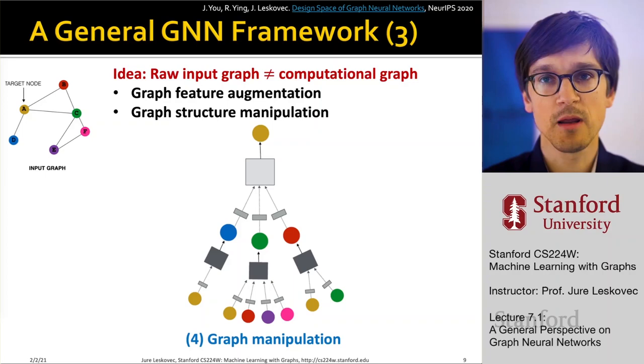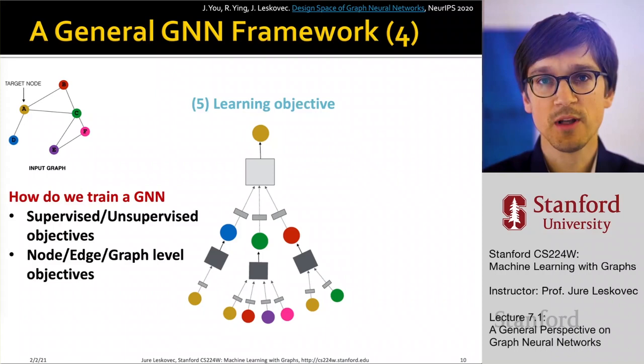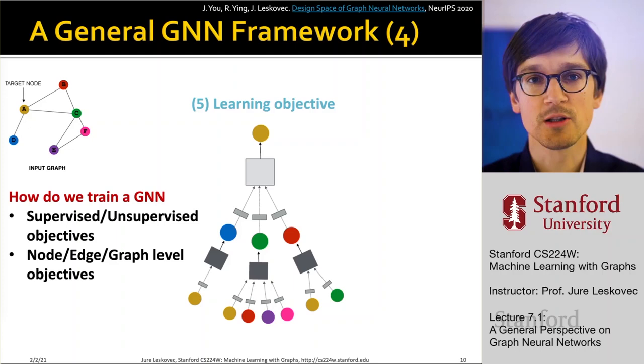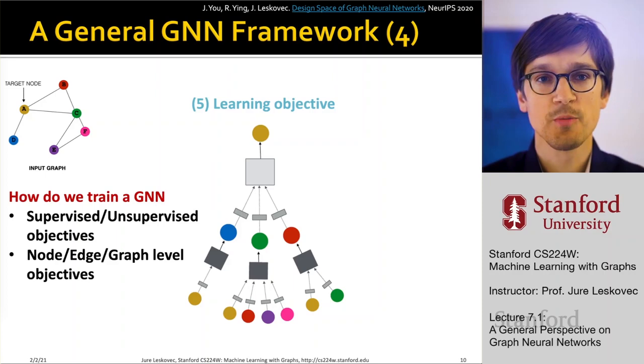And then the last part is in terms of the learning, what kind of objective function, what kind of task are we going to use to learn the parameters of our graph neural network? So how do we train it? Do we train it in a supervised, unsupervised objective? Do we do it at the level of node prediction, edge prediction, or entire graph level prediction tasks?